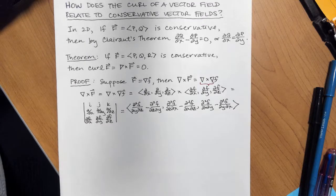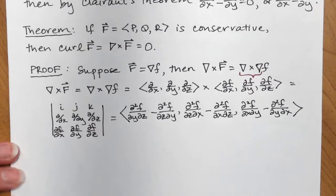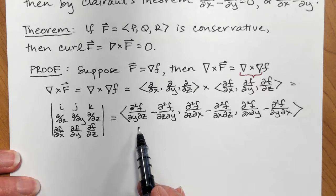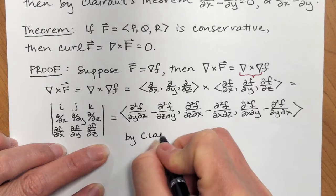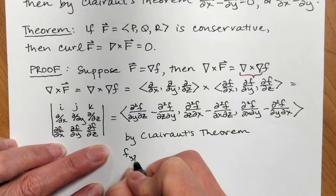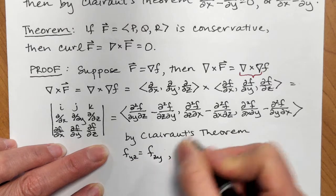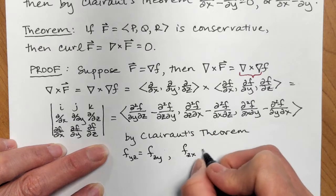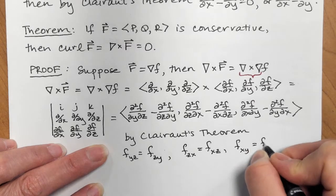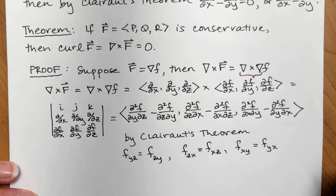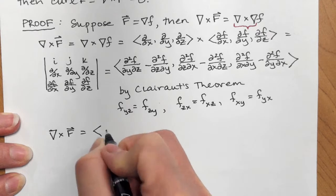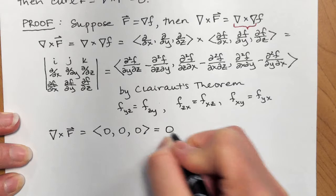But then, by Clairaut's theorem, mixed partial derivatives commute. That means f_yz = f_zy, f_zx = f_xz, and f_xy = f_yx. Therefore, each component is zero, so ∇ × f equals the zero vector, and curl f equals zero. So if f is a three-dimensional vector field, that vector field is conservative, and the second partial derivatives of f are defined and continuous, then the curl of that vector field equals zero.